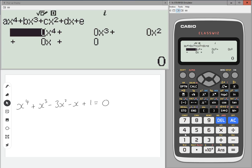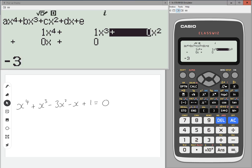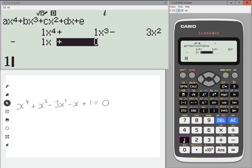We just need to type in the coefficients. We've got one lot of x to the four, one lot of x cubed, minus three lots of x squared, minus one lot of x, and plus one on the end.